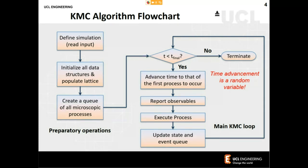This is the serial algorithm. As we'll discuss, in order for one process to happen, some other events have had to happen before it — there is a causality relationship between the processes simulated by kinetic Monte Carlo.